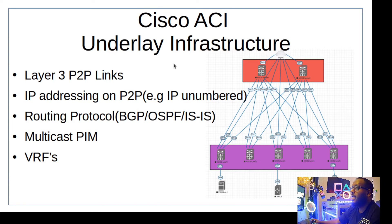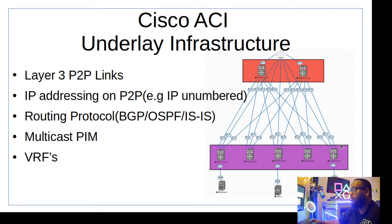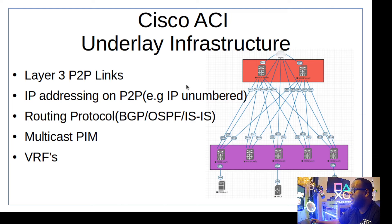The underlay infrastructure is Layer 3 — we're doing point-to-point links across the spines and leaves. Each spine connects to all the leaves, and each leaf connects to all the spines. Spines never connect to each other, and leaves never connect to each other directly. The IP addressing is point-to-point — slash 30 or slash 32 works fine.